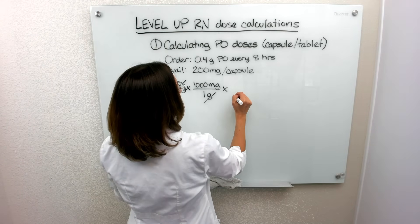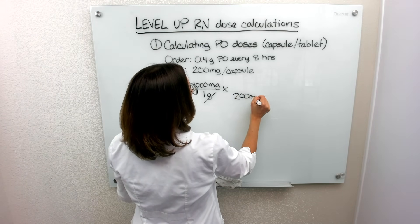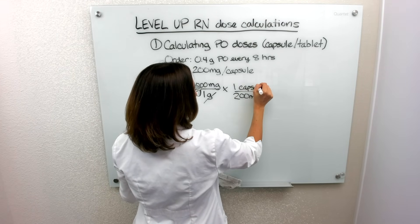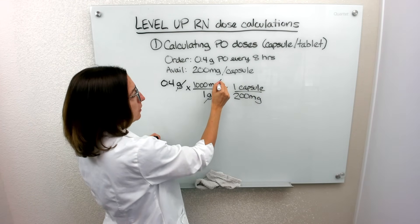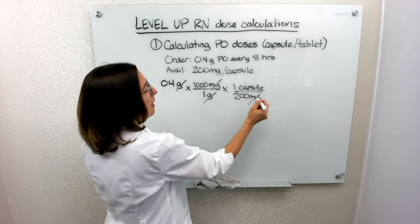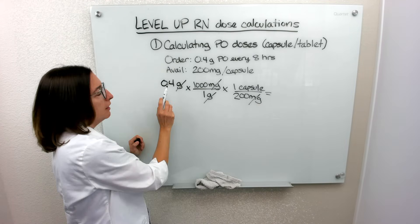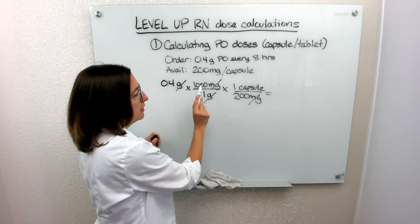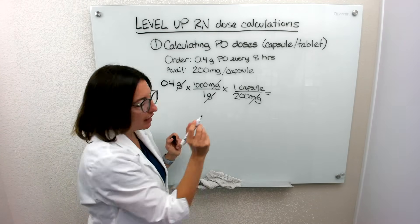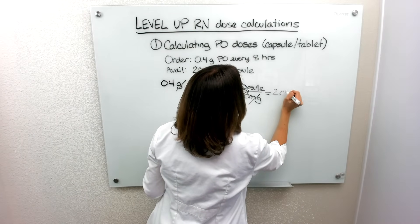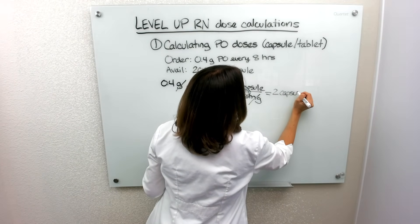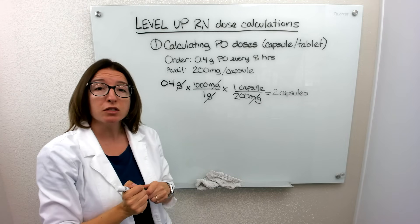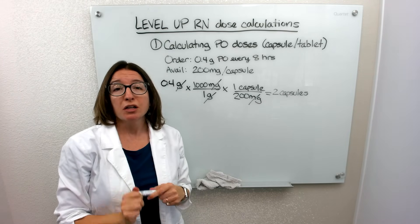I multiply this by the ratio: 200 milligrams are in one capsule, and my milligrams cross off. Then I do my multiplication: 0.4 times 1,000, divided by 200, and that gives me two capsules that I need to give my patient for the dose that is ordered. So that's problem 1.